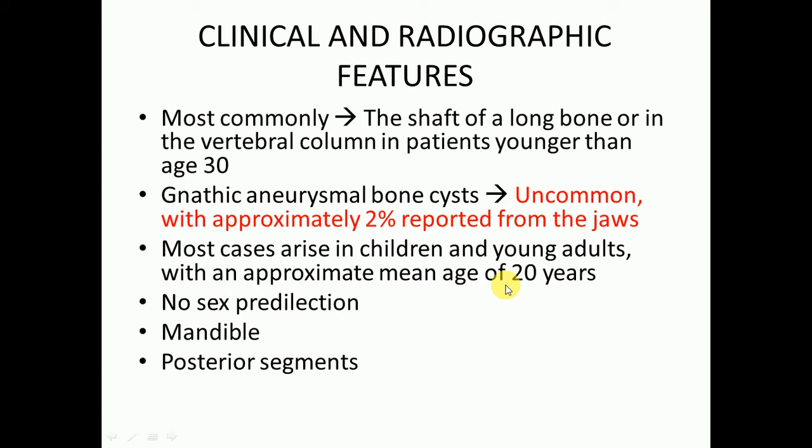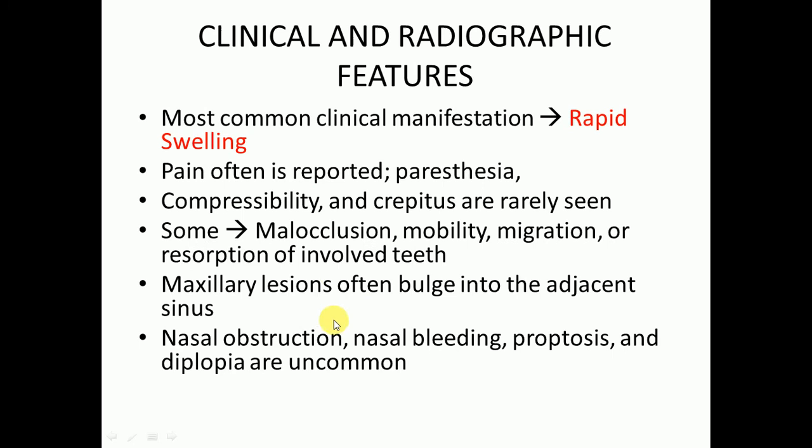There is no sex predilection. The mandible is most commonly involved, and the posterior segment which includes the angle and ramus are most commonly involved. The most common clinical manifestation is rapid swelling; there may be pain and paresthesia. Compressibility and crepitus are rarely seen. In some cases there may be malocclusion, mobility, migration, or resorption of the involved teeth. Maxillary lesions often bulge into the adjacent sinus, but nasal obstruction, nasal bleeding, proptosis, and diplopia are uncommon.